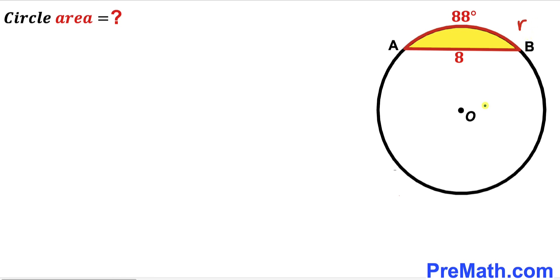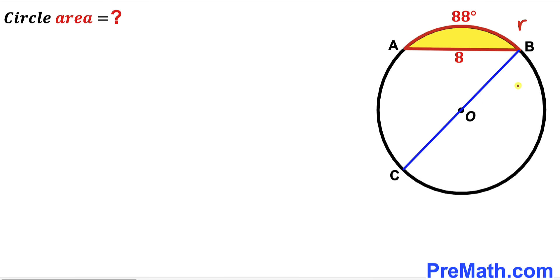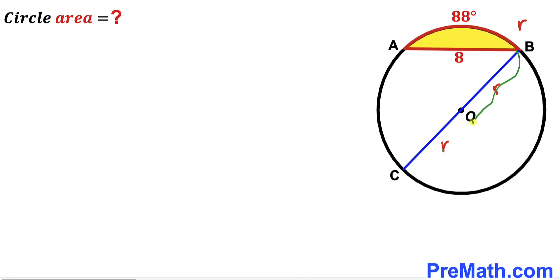In this next step we are going to draw some auxiliary lines. As you can see, we have drawn this diameter BC that passes through this center O. We can see OB is the radius of this circle, so I am going to label this as lowercase r. Likewise OC is the radius as well, so this whole diameter BC length is going to be two times lowercase r.